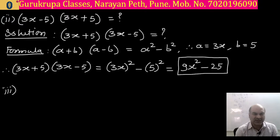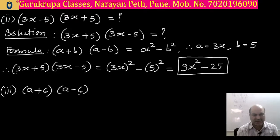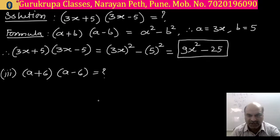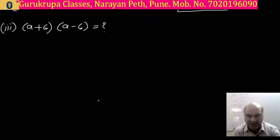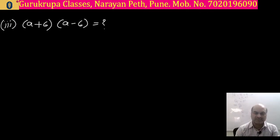That is the answer for the second question. Going to the third part: a plus 6 multiplied by a minus 6. This is the next question asked of you.